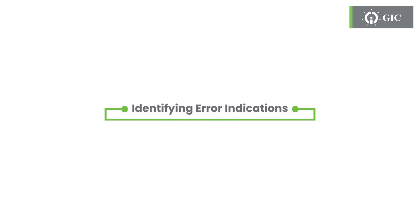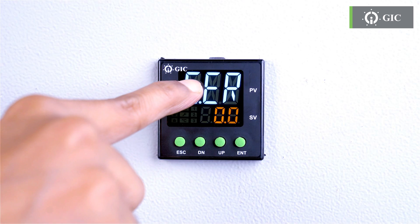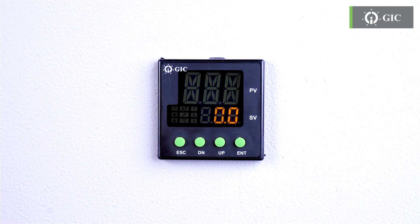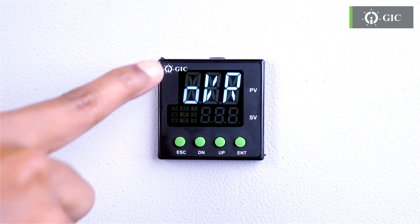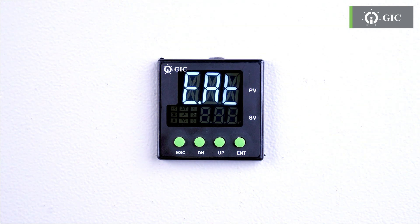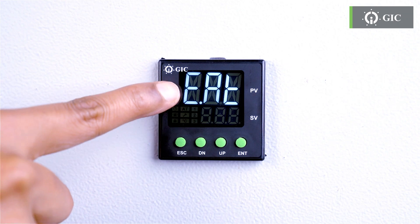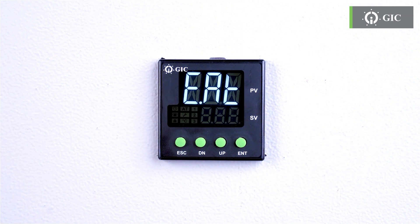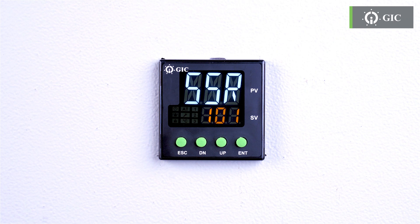The updated temperature controller is smart to point out errors when something goes wrong, so keep an eye for the following indications. If it says S.ER, there might be an issue with the sensor — open or break error. If you see OVR, it's indicating an overrange error. And if it's UNR, it's telling you about an underrange error. If you see E.AT, it means an error in autotuning. If it says SSR, it means there's a short circuit detection. Now you can even detect errors in your system.